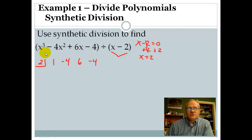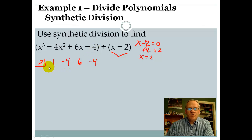You do need to have these in descending order — x to the third, x squared, x, and then a number. We'll talk about this in the next example, but if you're missing a term or terms, you need to put a 0 in for that, just like we did when we were doing the long division.